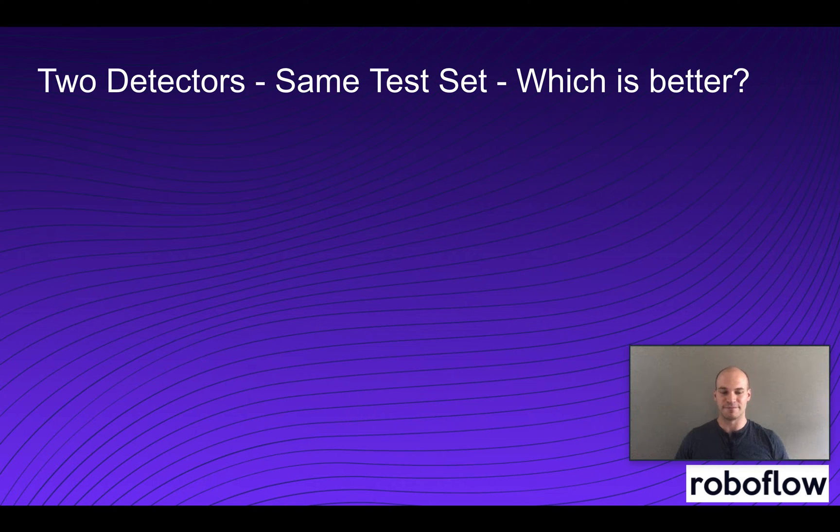So now moving forward, let's say we have two object detectors. We've trained them on the same training data and now we want to decide which is better. In this example, we've trained two custom detectors on blood cell images.